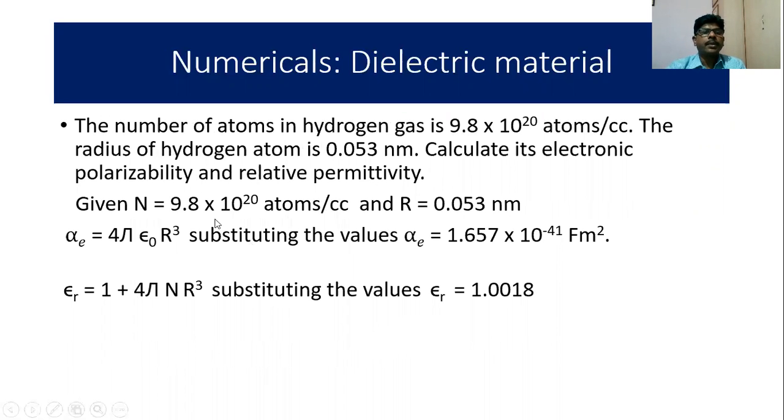Next problem: the number of atoms in hydrogen gas is 9.8 × 10²⁰ atoms/cc. The radius of hydrogen atom is 0.053 nanometer. Calculate its electronic polarizability and relative permittivity. The given data is here.